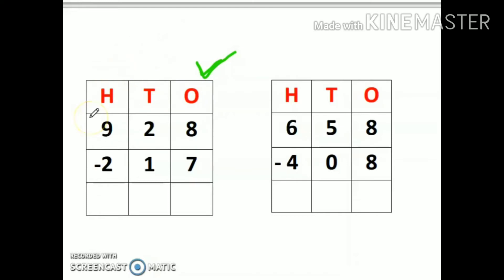Now, eight minus seven. Whenever you have to do any subtraction sum, make sure that you check whether the number on the top is smaller or bigger. If the number on the top is bigger than the bottom number, then it's simple subtraction. Otherwise, if the number on the top is smaller than the number written downwards, then it is a borrowing sum. Here the number on the top is bigger, so this is simple subtraction.